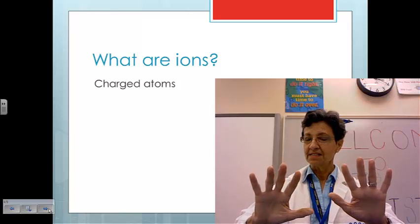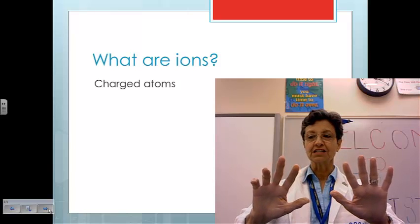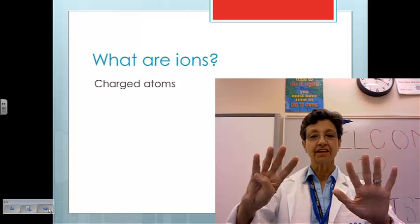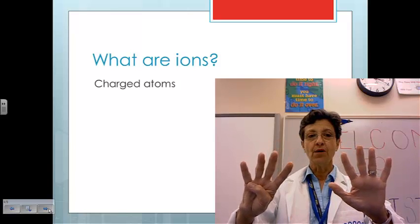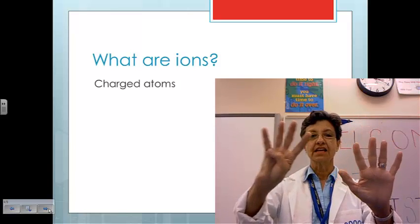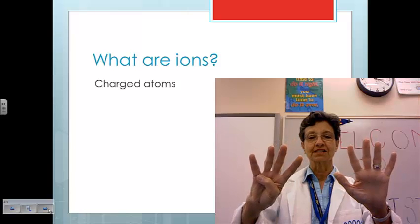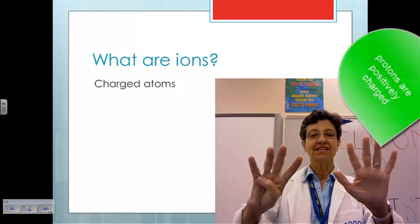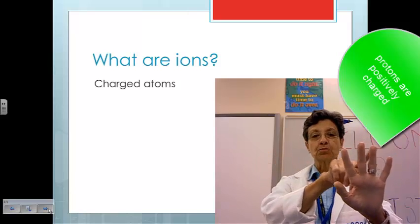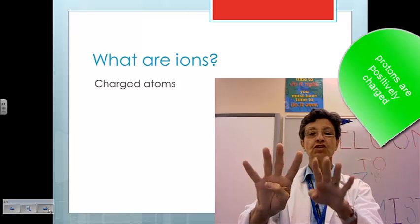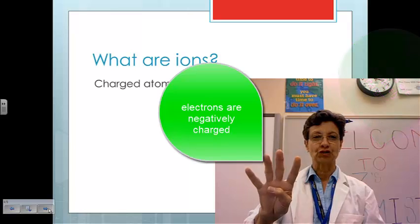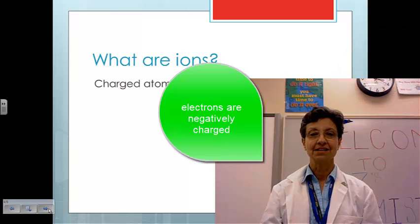What happens is that if an electron is lost, let's say that's lost, now I have five protons and four electrons, meaning that that would give me a positive one charge. Why? Because protons are positively charged. Electrons are negatively charged. That's how ions form.